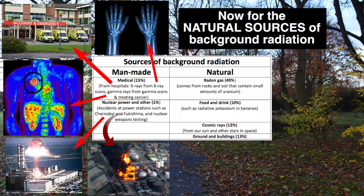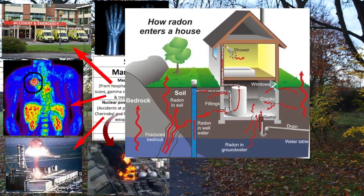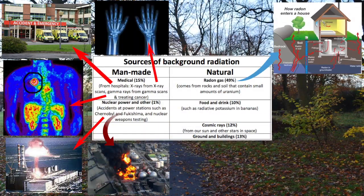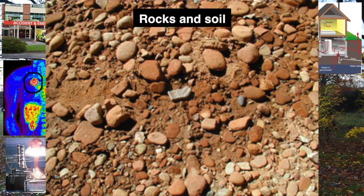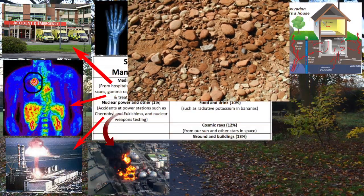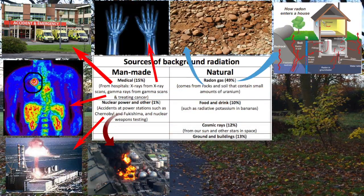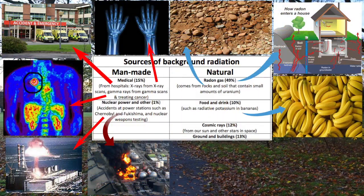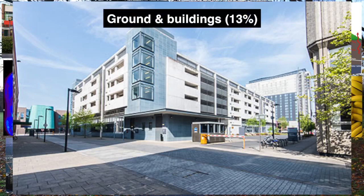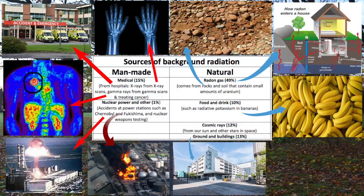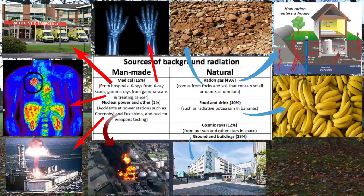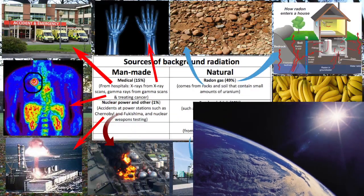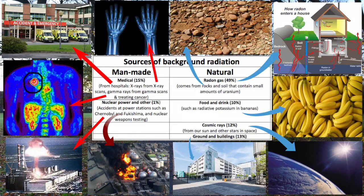Now for the natural sources of background radiation. Radon gas accounts for 49%, which comes from rocks and soil that contain small amounts of uranium. Food and drink accounts for 10%. Ground and buildings account for 13%. Cosmic rays account for 12%, coming from our sun and other stars in space.